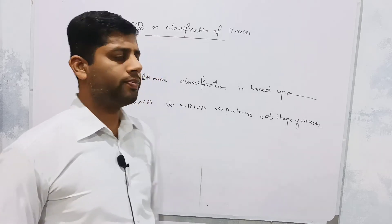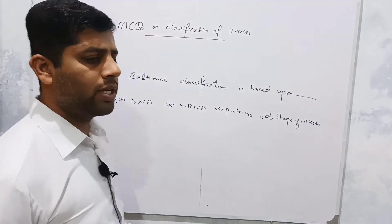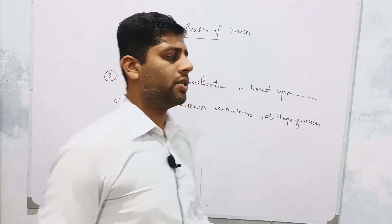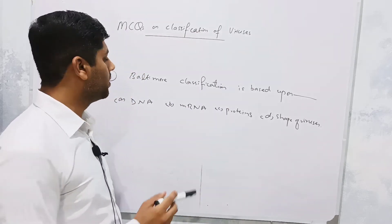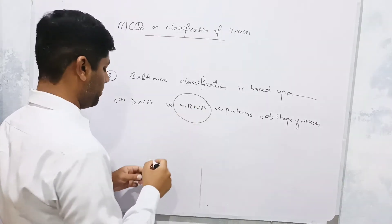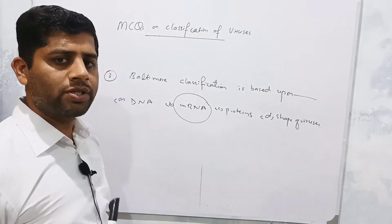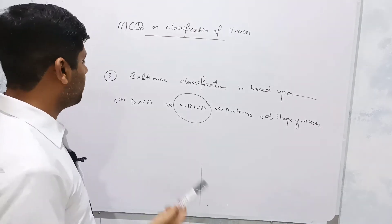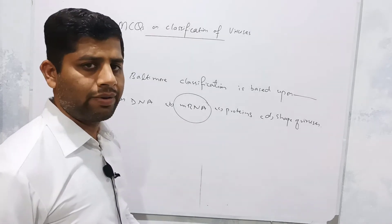The third question is: what is the Baltimore classification based upon? As discussed in our previous lecture, the Baltimore classification system classifies viruses into seven classes, proposed by David Baltimore, on the basis of messenger RNA synthesis. The correct option is: messenger RNA synthesis. Other options — DNA, proteins, and shapes of viruses — are irrelevant and incorrect.